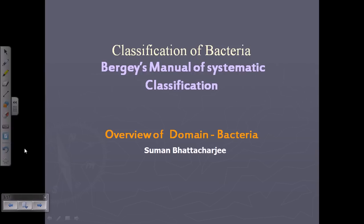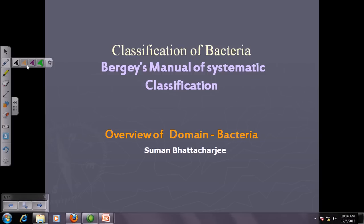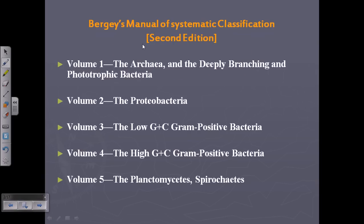In Bergey's Manual of Systematic Classification we can find different chapters and volumes, each containing information about a particular type of bacteria. In the second edition of Bergey's Manual, we have five volumes. Each volume covers different types of bacteria with different characteristics. Each volume has general characteristic features, and bacteria which fulfill those features are placed into that volume.